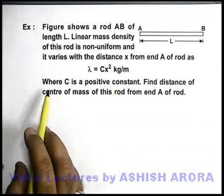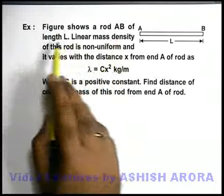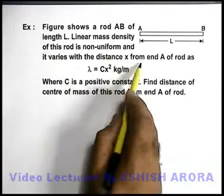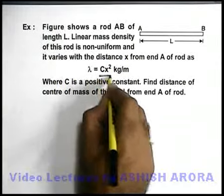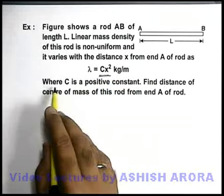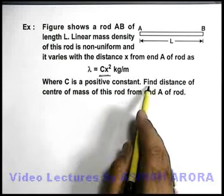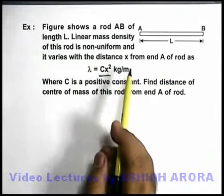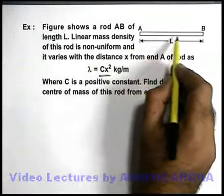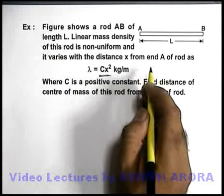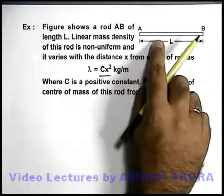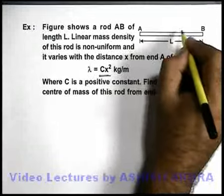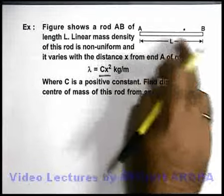Let's discuss an example. A rod AB of length L has a non-uniform linear mass density that varies with distance x from end A as λ = cx² kg/m, where c is a positive constant. We are required to find the distance of center of mass from end A. Qualitatively, as distance from A increases the rod gets denser, meaning most of the mass lies on the right half. So the center of mass will certainly be located on the right half.